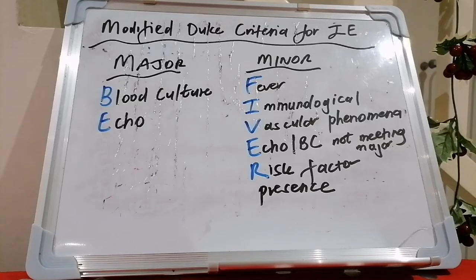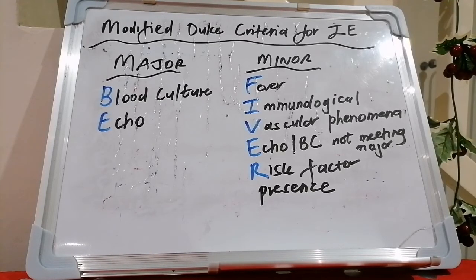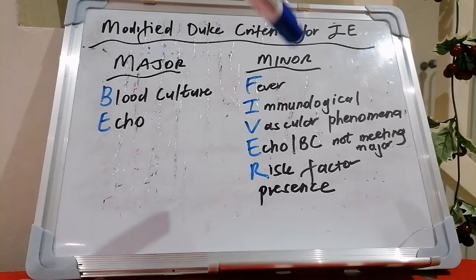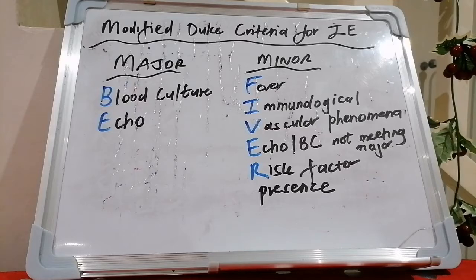As per the European Society of Cardiology guideline for infective endocarditis, we can define it clinically as being either definite, possible, or rejected. If it's definite, you can have either two major criteria, or one major and three minor, or all five minor criteria. If it's possible, you may have one major and one minor, or just three minor criteria.